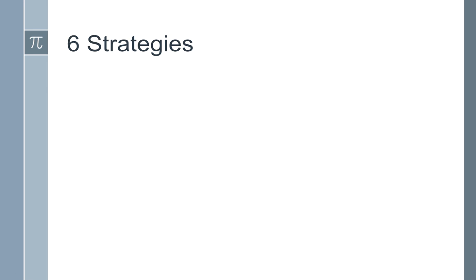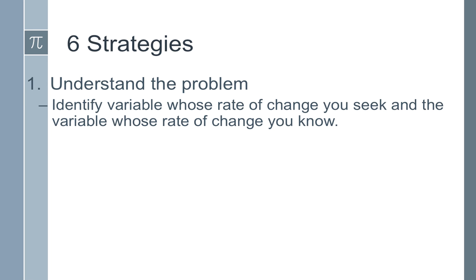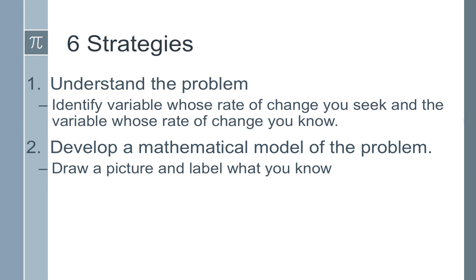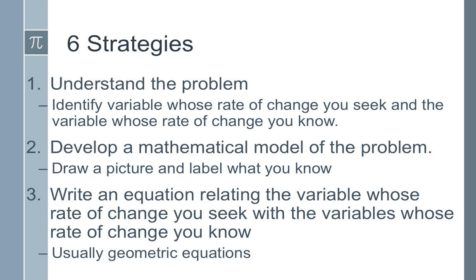So we're going to start off with six little strategies here. The first and foremost is obviously understand the problem. Identify what you're trying to find and what you know. So just make a note of it. That's usually what we do in word problems. We figure out what we know and what we want to know. Develop a mathematical model. Usually it starts with just drawing a picture and labeling what you know and then writing the equation. That's what mathematical model means.